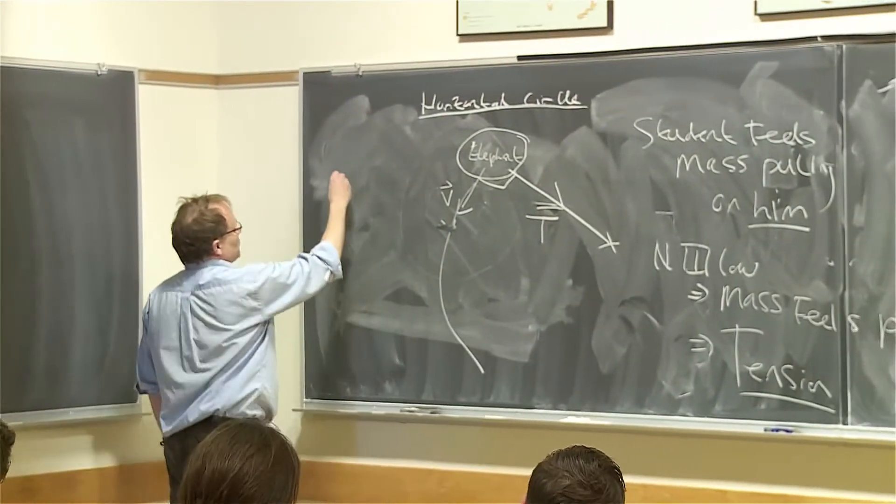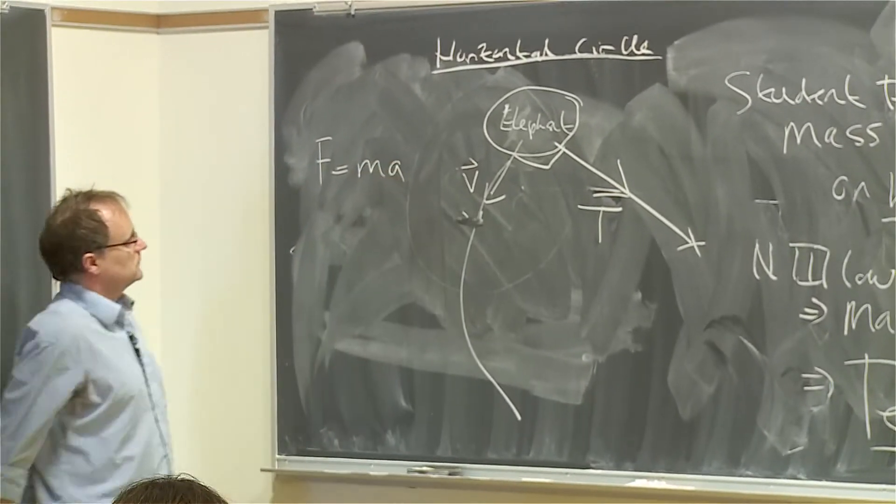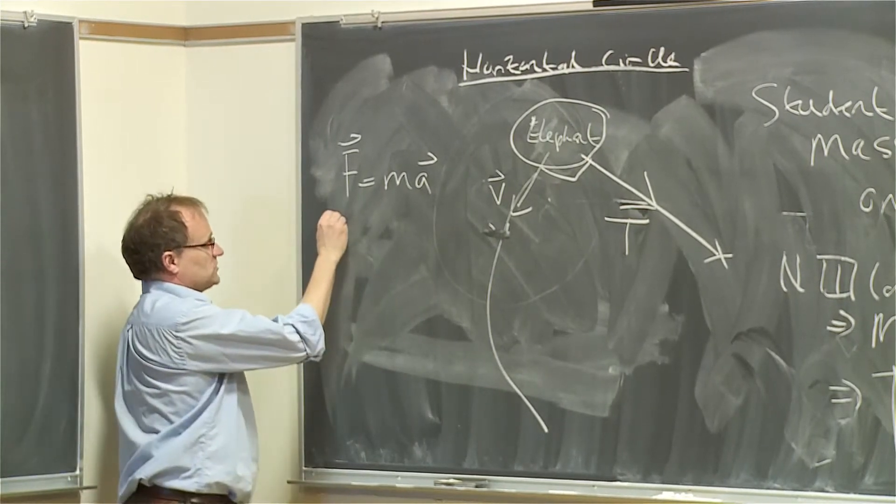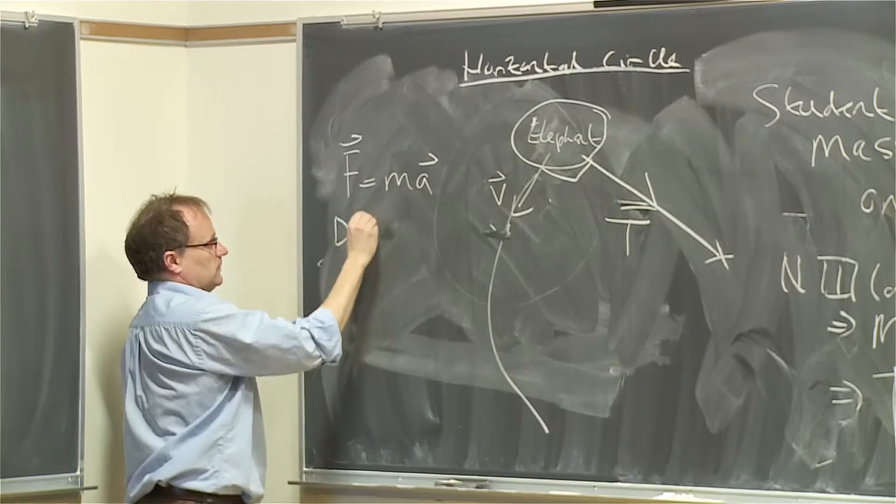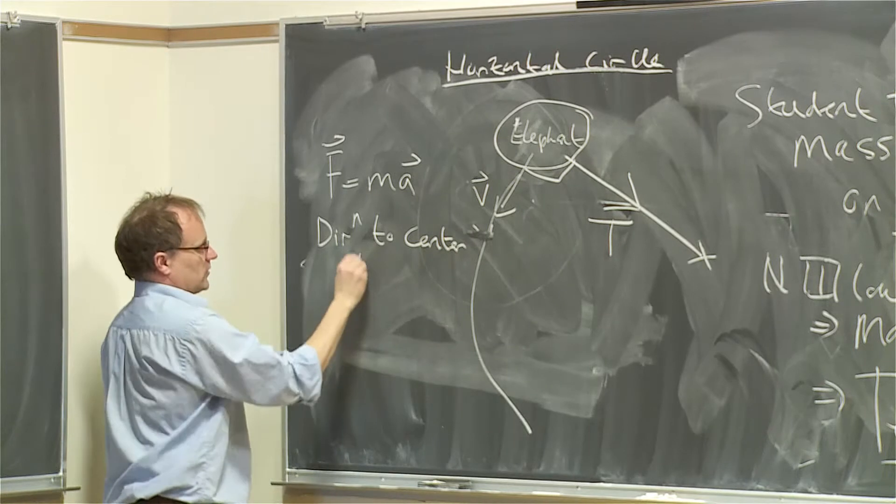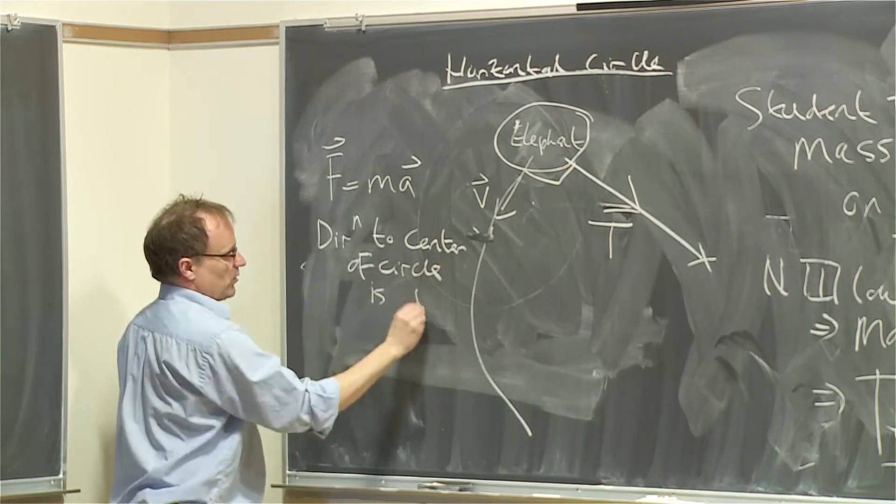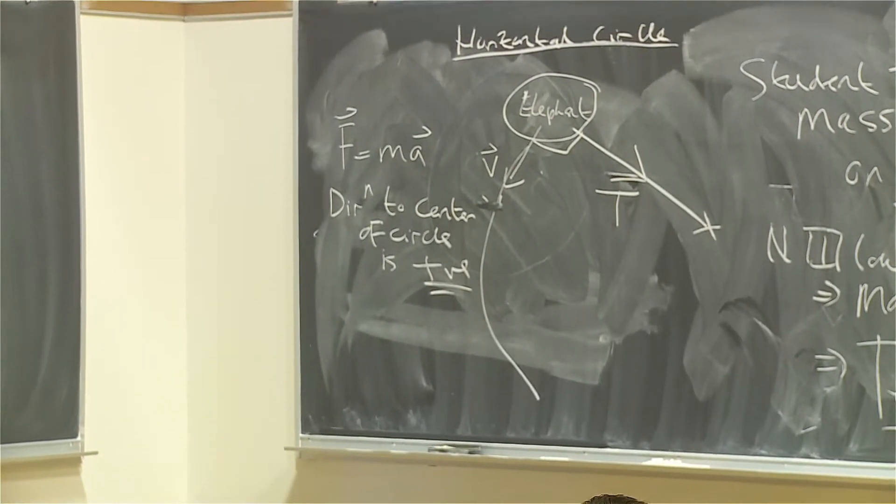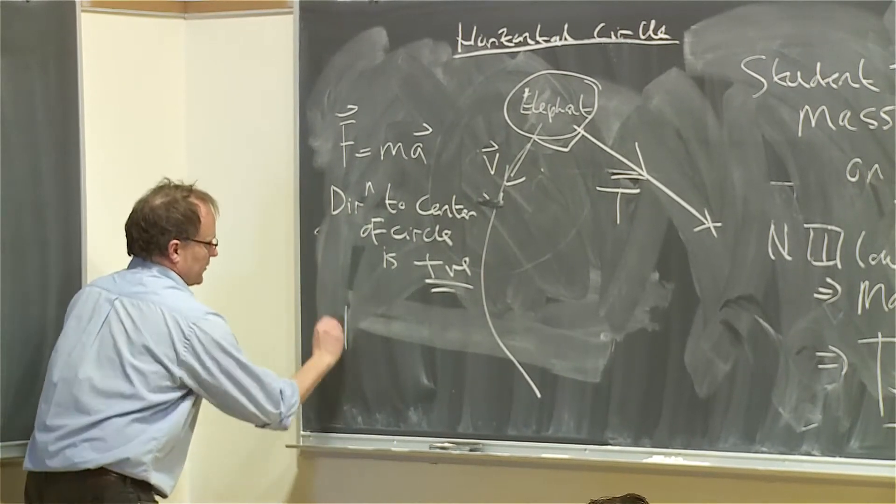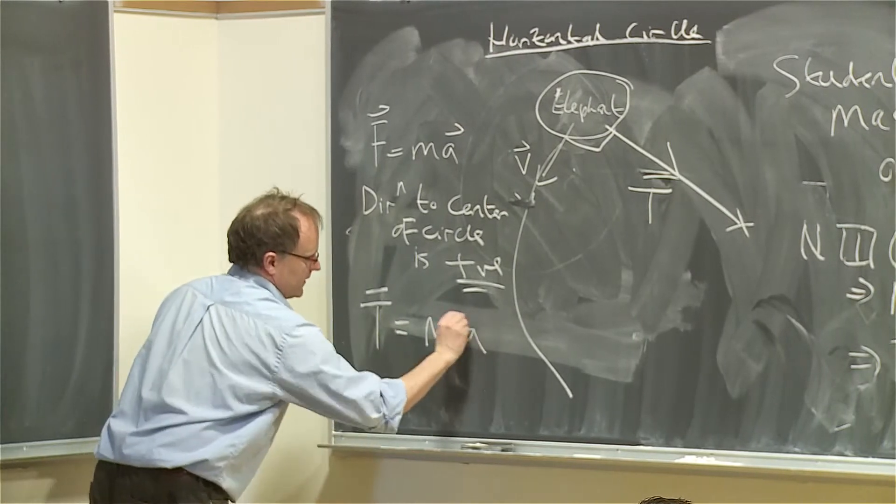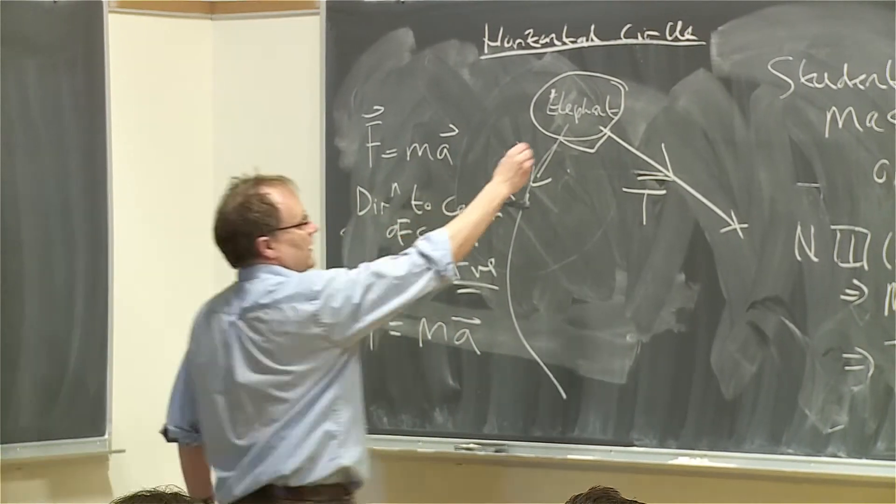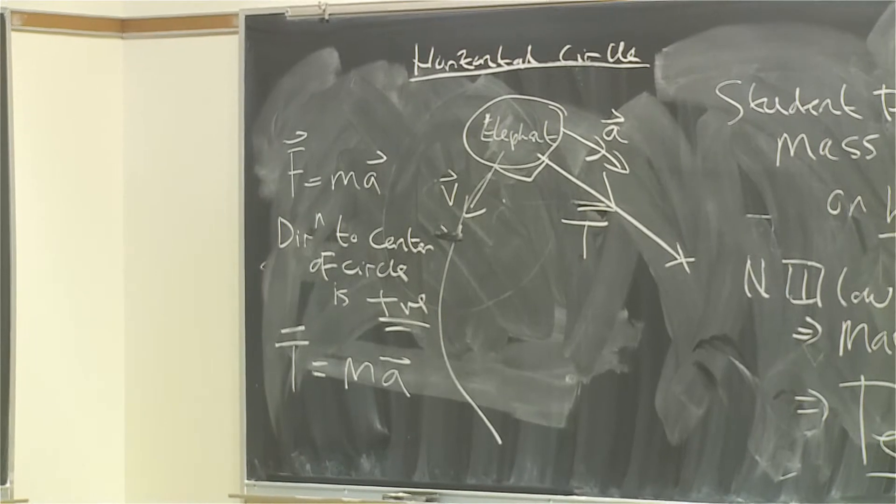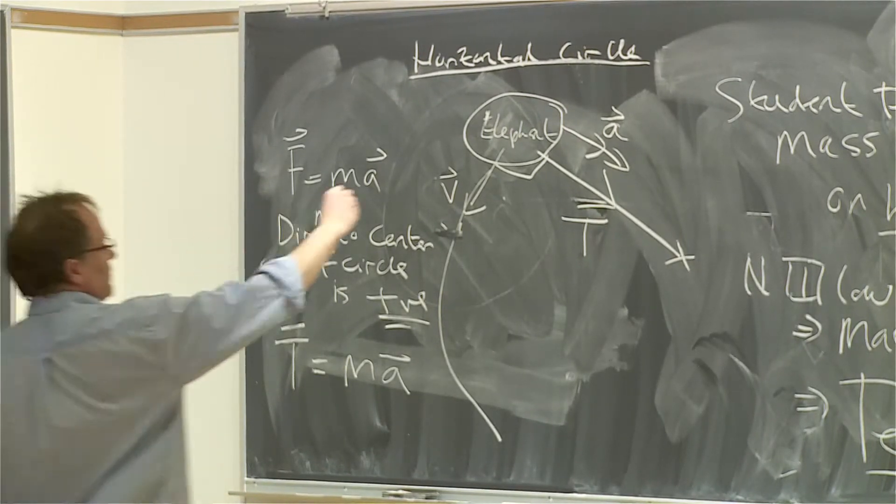So if we write F equals MA, we could write it as a vector. The convention is that direction to the center of circle is positive. The direction to the center, that's our convention. It's just going to make things easier that we have a sign convention. The direction to the center of circle is positive. So if we write F equals MA, we're going to end up with T equals MA. And therefore, the acceleration of the elephant is in this direction.